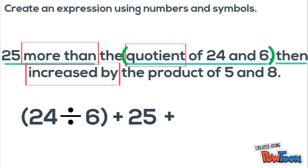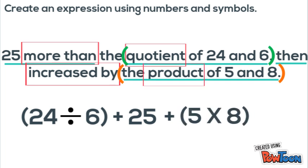So we write another plus sign. And then we ask ourselves what are we adding? Well we're adding the product of 5 and 8. So we put 5 times 8 in parentheses because we have to do that before we add it.